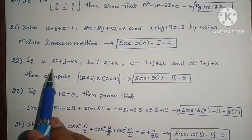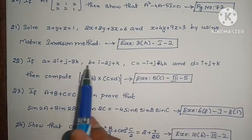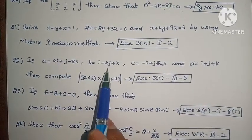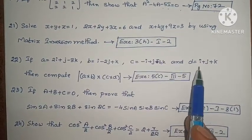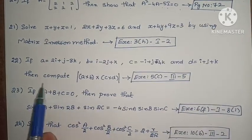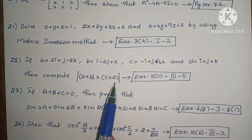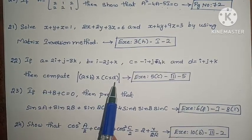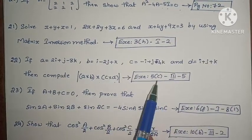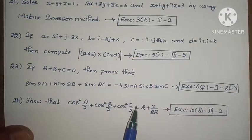Next, if a equals 2i plus j minus 3k, b equals i minus 2j plus k, c equals minus i plus j minus 4k, and d equals i plus j plus k, then compute modulus of a cross b cross c cross d. Exercise 5, Third Roman, Fifth one.